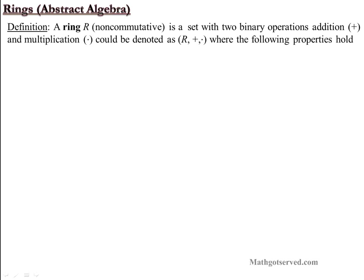So a ring R — we're focusing on non-commutative rings in this definition. There are commutative rings and non-commutative rings. A non-commutative ring is a set with two binary operations, namely addition and multiplication, and it can be denoted as R with those two operations, where the following properties or axioms hold.